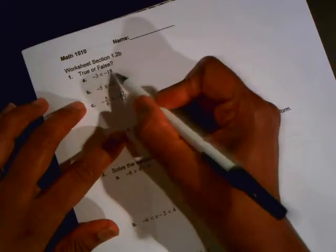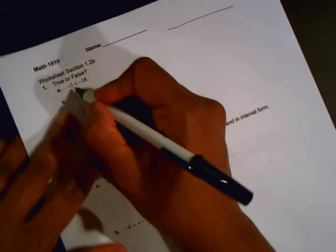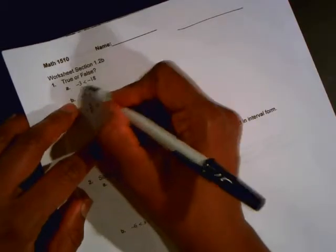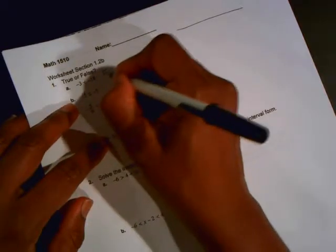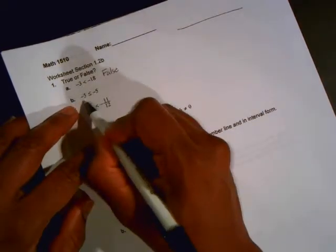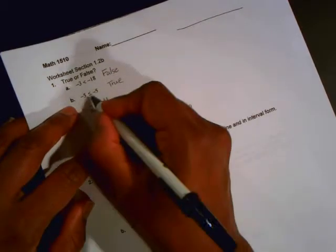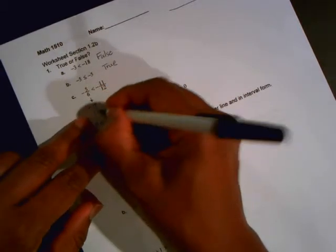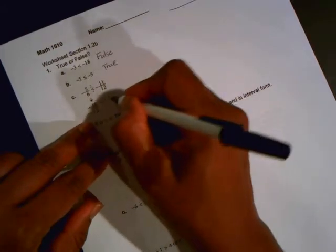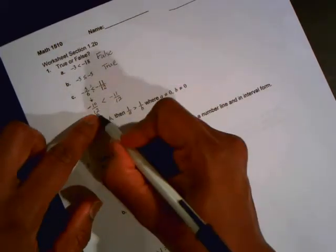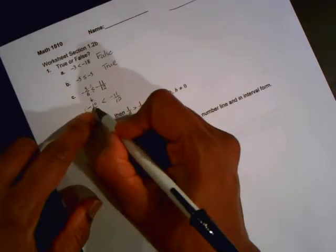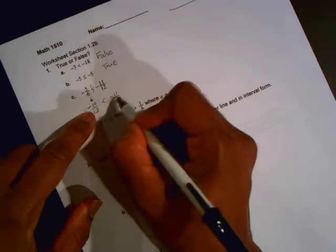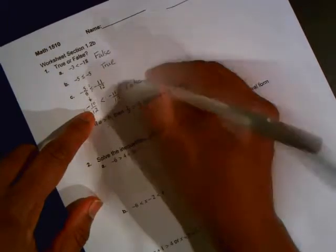Some true or false questions first. Negative 3 is less than negative 18. Is that true or false? $3 in the hole is actually better than being $18 in the hole, so it should really be greater. So this would be a false. Negative 5 is less than or equal to negative 5 is true because it's equal and that's part of that statement. For the next one, it's a little tricky because the denominators are different. But we can write this as negative 10 twelfths by just multiplying 2 on the top and bottom. So we can compare this. Since the denominators are the same, just focus on the top. Is $10 in the hole worse, less than $11 in the hole? So the answer is no. So it's false.